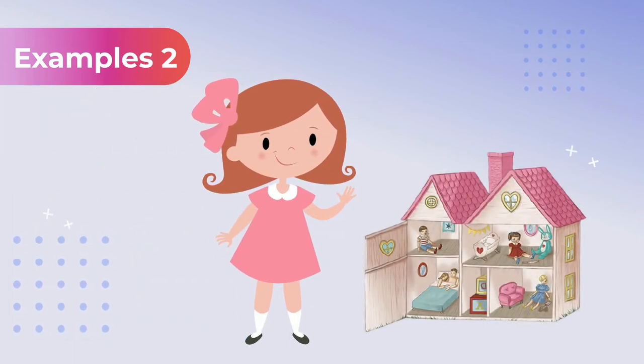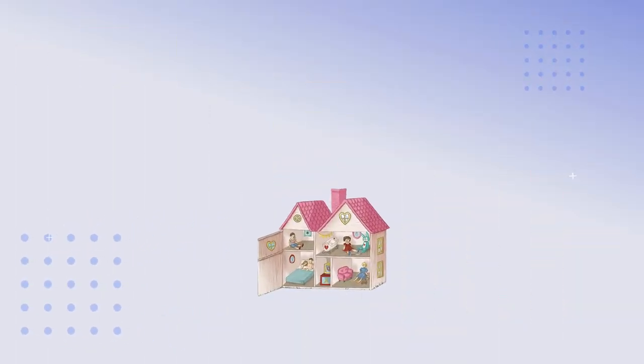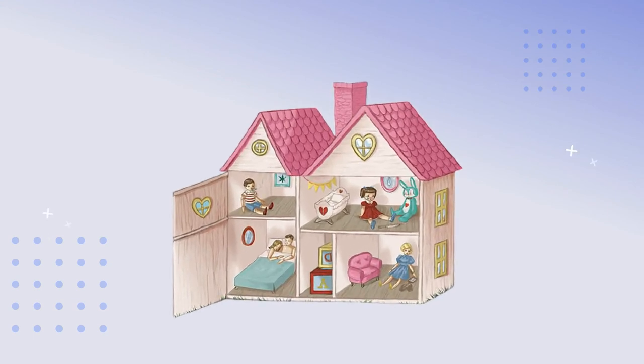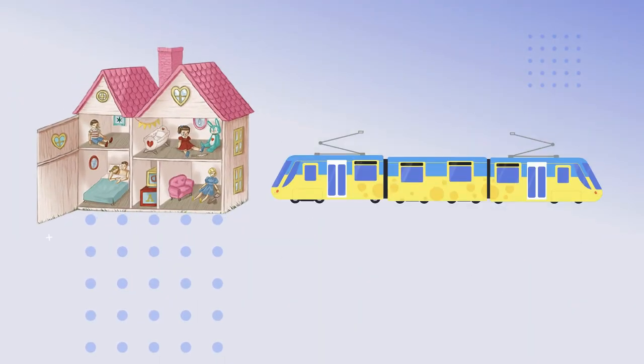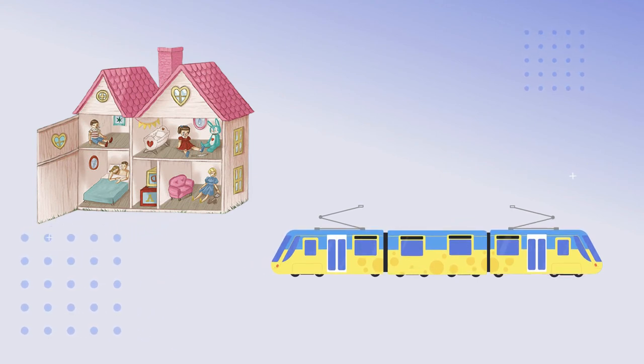Example two: here you see Alia is playing with a doll house. This toy house is a lot smaller than the house she lives in. It looks very much like a real house, but no one can really live in it.